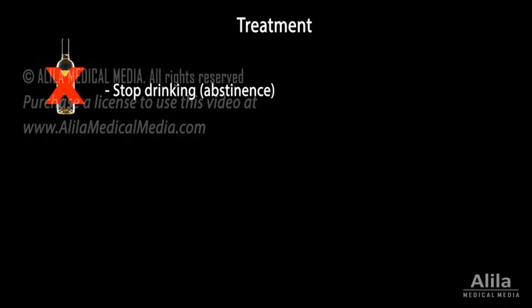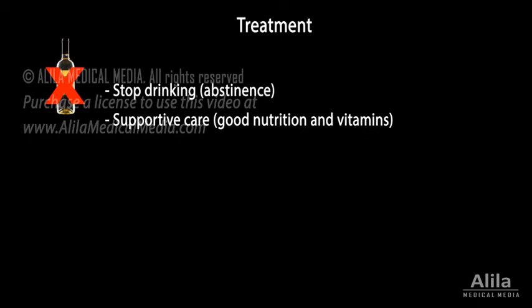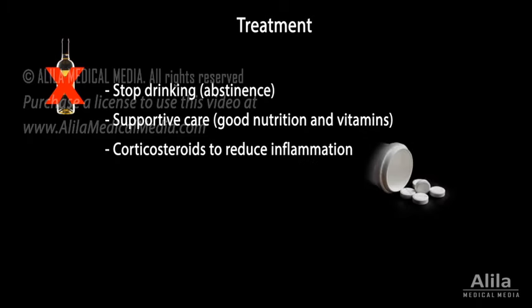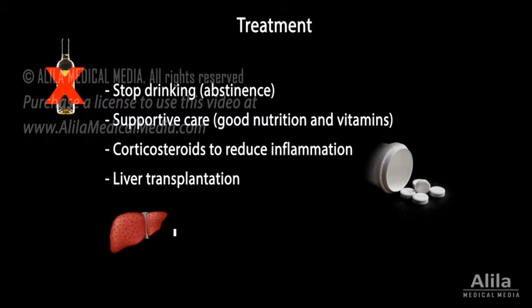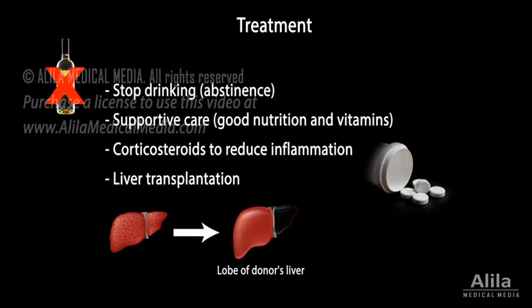Abstinence is the best treatment. Supportive care includes good nutrition and vitamin supplements. Corticosteroids may be used to reduce inflammation, but their effectiveness is still debatable. Liver transplantation may be considered for abstinent patients with severe liver damage.